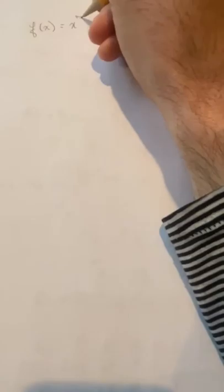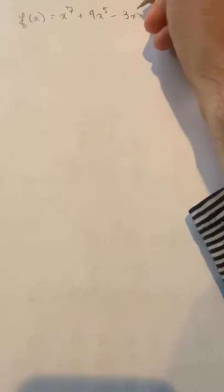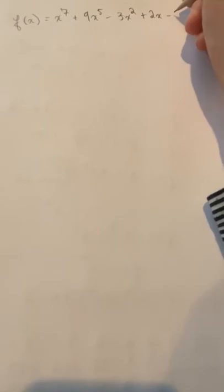And just to list some key terminology about polynomials, so if we have an example polynomial f of x equals x to the seventh plus 9x to the fifth minus 3x squared plus 2x plus 12.